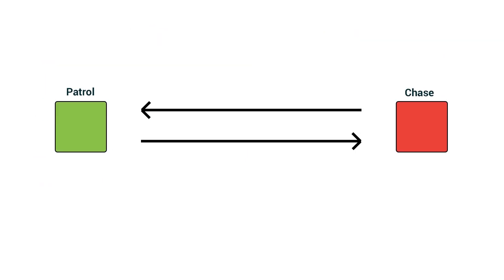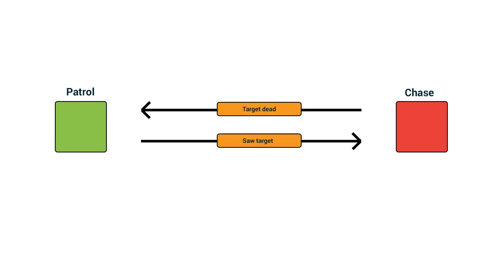The simplest example of finite state-based AI is our chaser AI. It has two states: patrolling and chasing. It can either be in patrol or chase state. We have conditions for the transitions between those states — if it sees a target, it transitions from patrol to chase. If the target dies, it transitions from chase back to patrol.